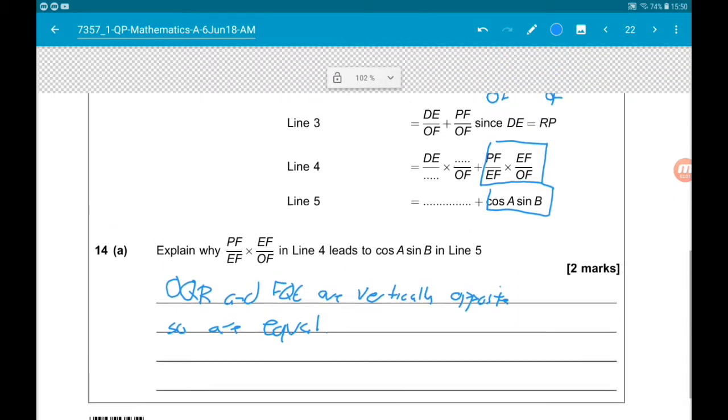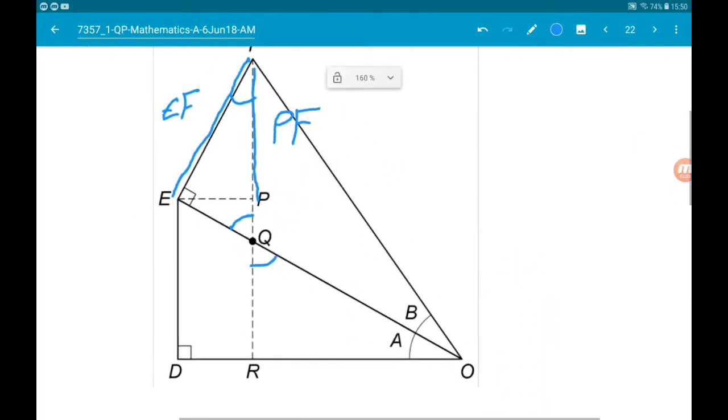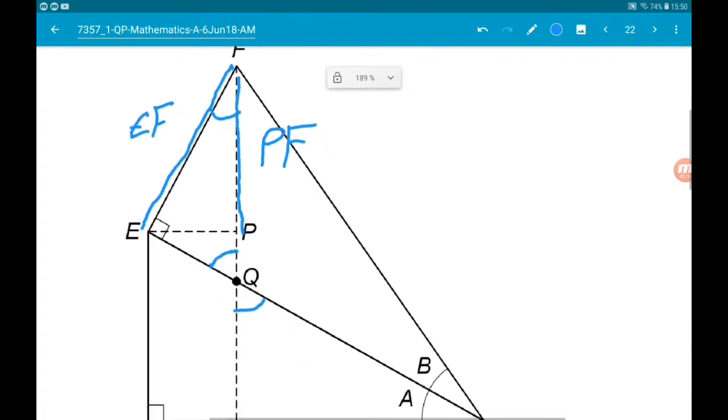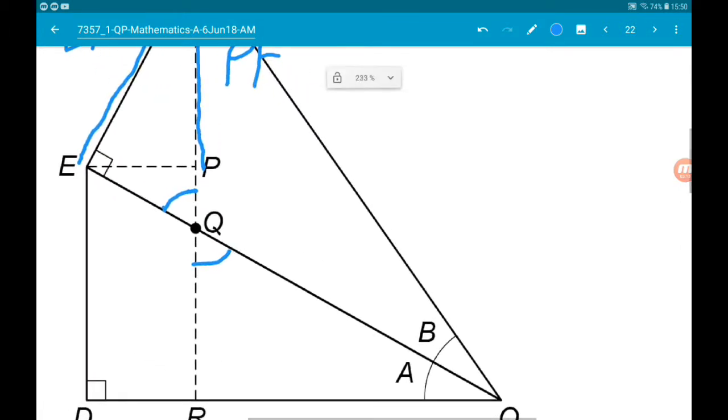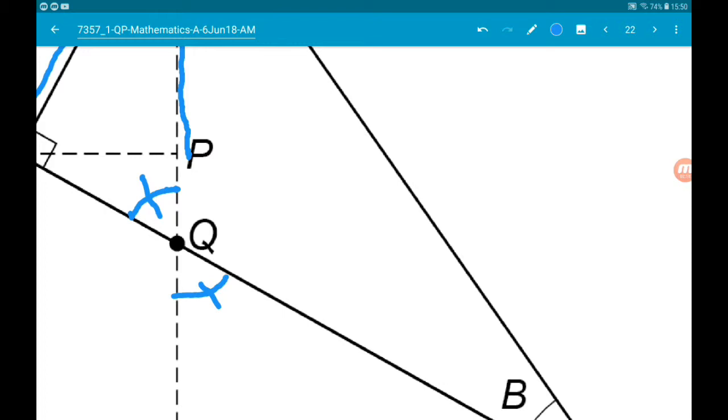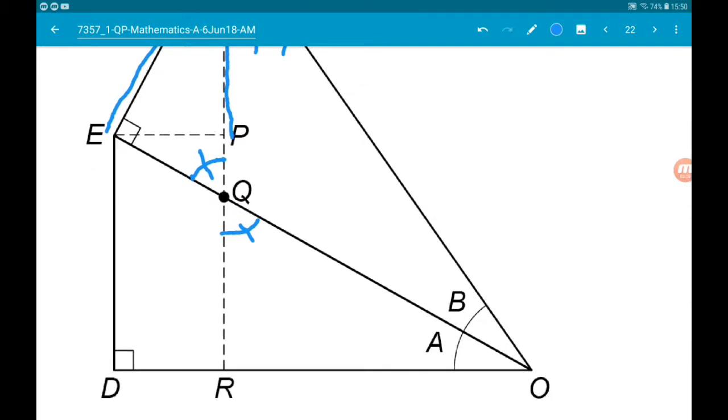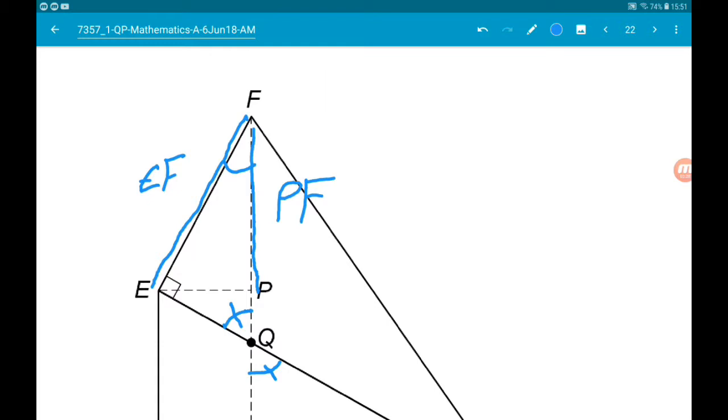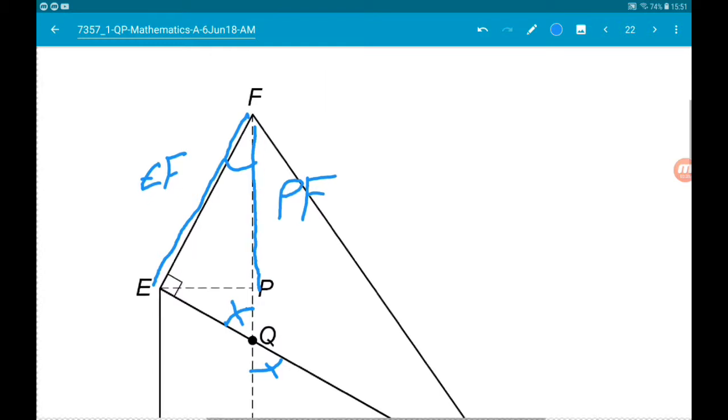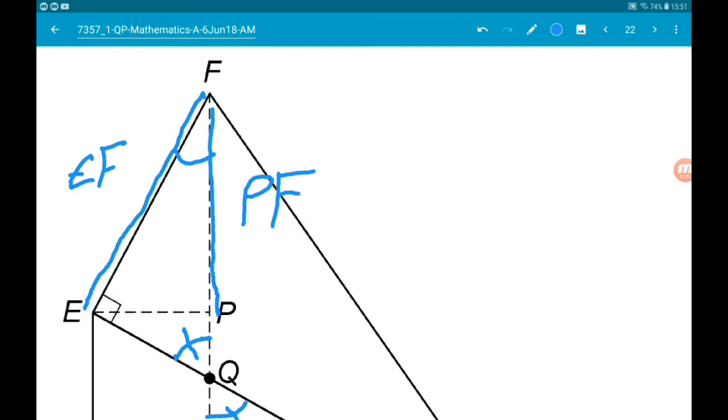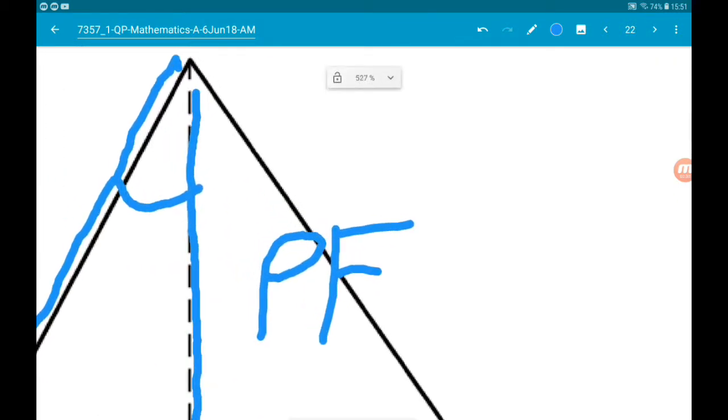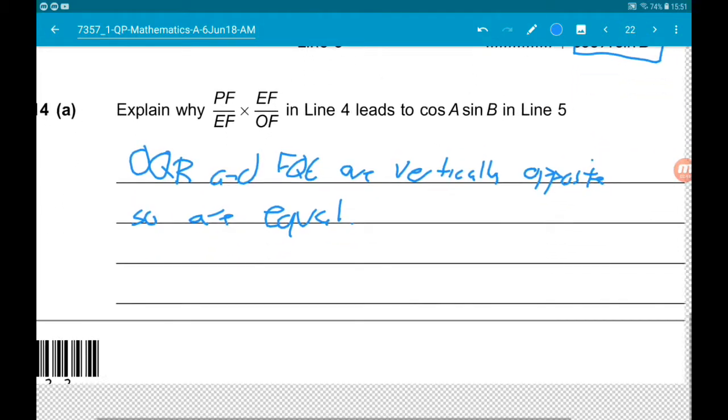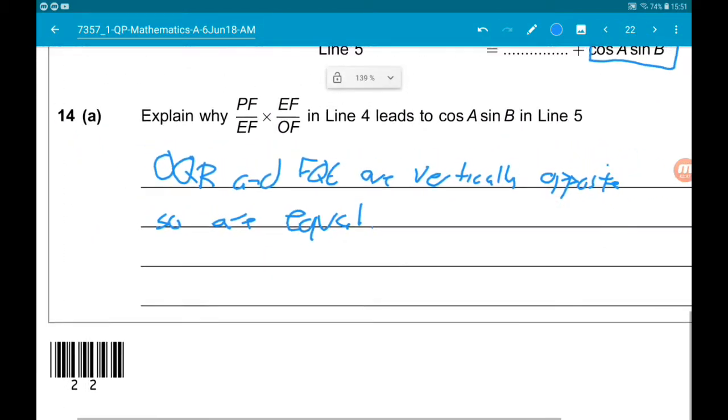And then we know that triangle F E Q has a right angle and one same angle as O Q R. Now they also both have a right angle. So we can now say that angle EPF, so this guy here is actually angle A. So that comes from this statement here.